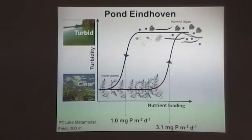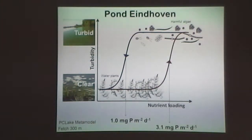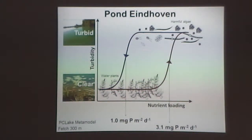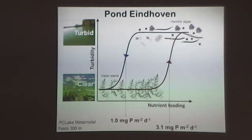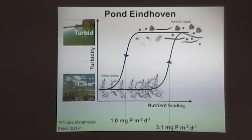Our analysis of the system also gave us some ideas about where the loadings need to be. So there's a modelling exercise — this comes with uncertainty of about 100%, but it gives at least an idea about the order of magnitude. So you know that you need to get to around 4 to 5 mg/m²/day to be able to go to a clear water state with submerged water plants. We use this kind of modelling always to get an idea of where we are and how far we need to go.